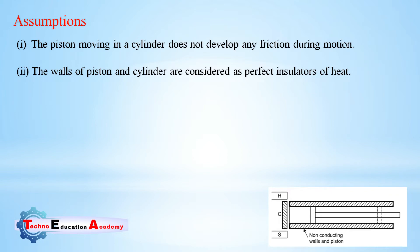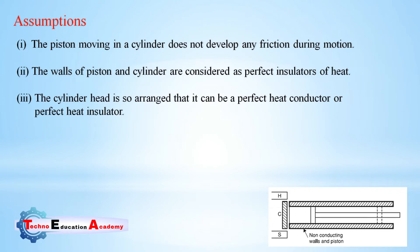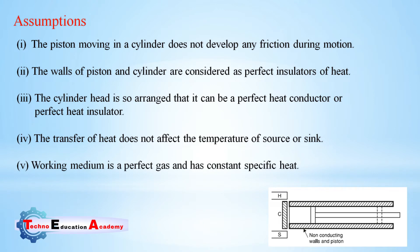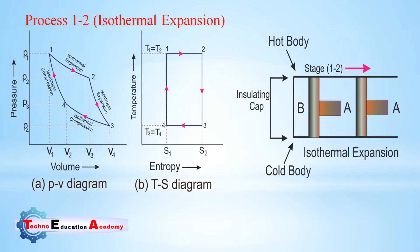The second assumption is that the walls of the piston and cylinder are considered perfect insulators of heat, meaning they will not reject heat to the surroundings. Third, the cylinder head is arranged so that it can be alternately a perfect heat conductor or a perfect heat insulator. Fourth, the transfer of heat does not affect the temperature of the source or sink. Fifth, the working medium is a perfect gas with constant specific heat. Compression and expansion are reversible.